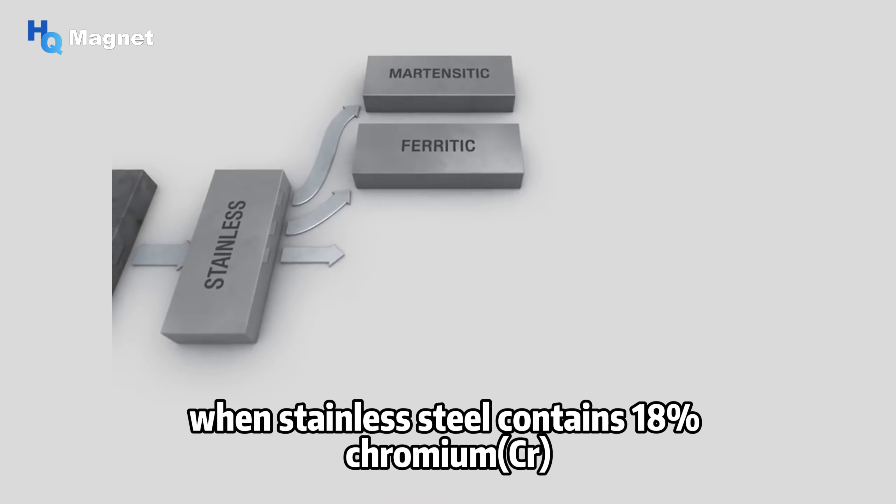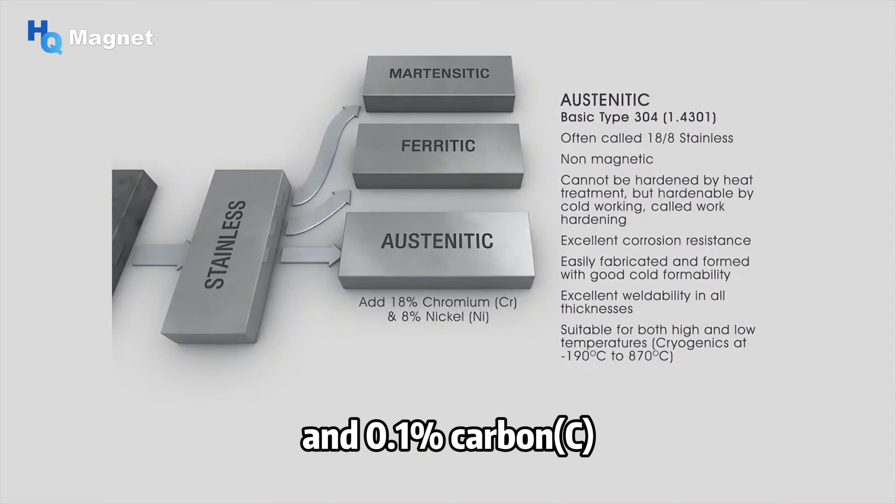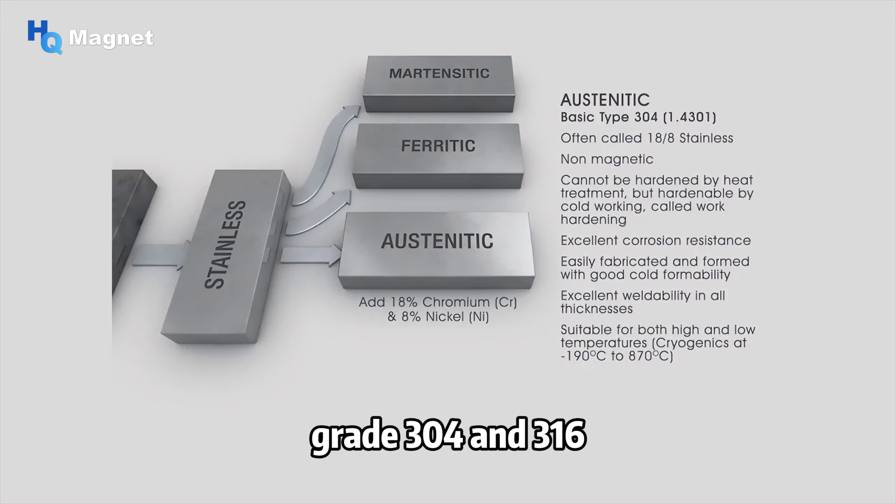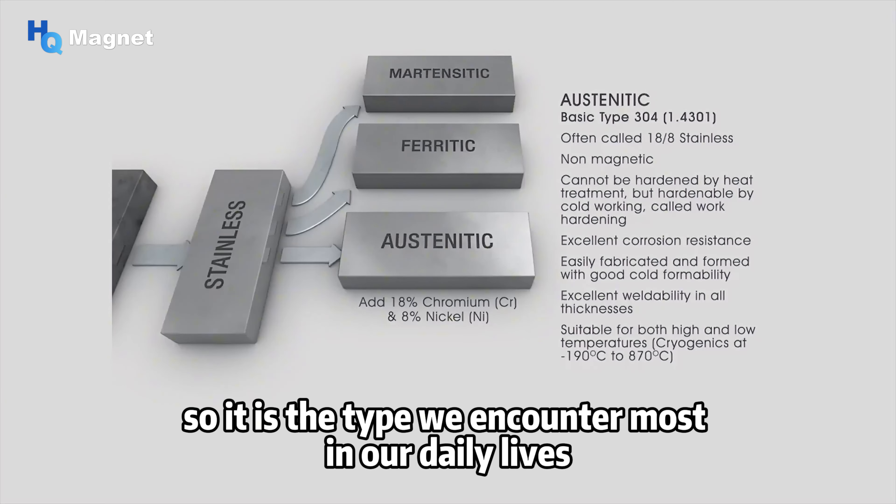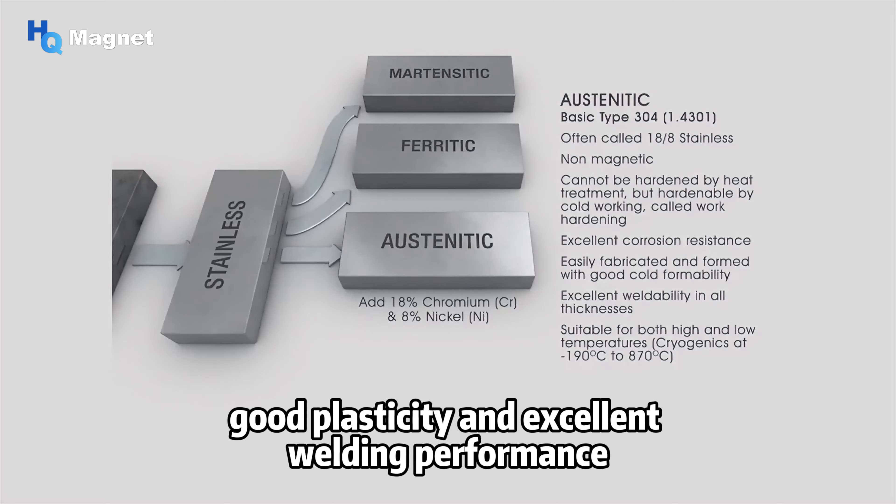When stainless steel contains 18% chromium, 8 to 25% nickel, and 0.1% carbon, it has a stable austenite structure. Austenitic stainless steel is the main material for food-grade 304 and 316 stainless steel, so it is the type we encounter most in our daily lives. Due to its excellent corrosion resistance, good plasticity, and excellent welding performance, austenitic stainless steel is widely used in various tableware, medical equipment, and chemical equipment.